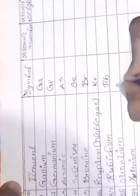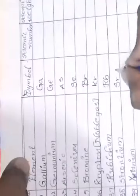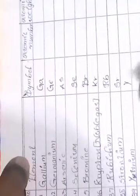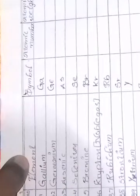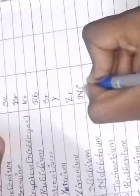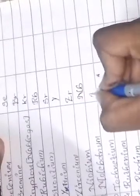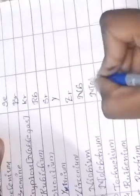Strontium symbol is Sr. Yttrium symbol is Y. Zirconium symbol is Zr. Niobium symbol is Nb. Molybdenum symbol is Mo. Technetium symbol is Tc.